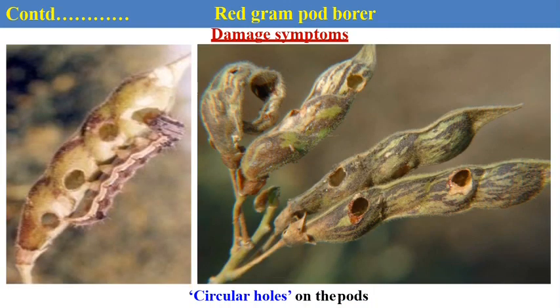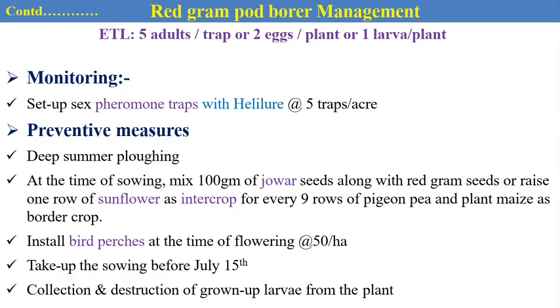The typical characteristic damage symptom produced due to the feeding of the larva of Helicoverpa armigera is circular bore holes on the infested pods. For management, we should know the Economic Threshold Level (ETL) of this pest: five moths per pheromone trap, or two eggs per plant, or one larva per plant — after which we can go for management practices.